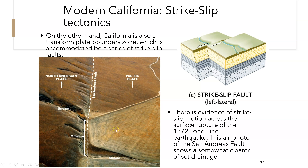In strike-slip tectonics it's a little different — plates slide past each other. The Pacific plate and North American plate interact along the coastline, creating the San Andreas fault. The San Andreas fault is a right-lateral strike-slip fault. If you're standing along a stream looking across the fault, the rest of the stream is to the right — that's a right-lateral strike-slip fault.